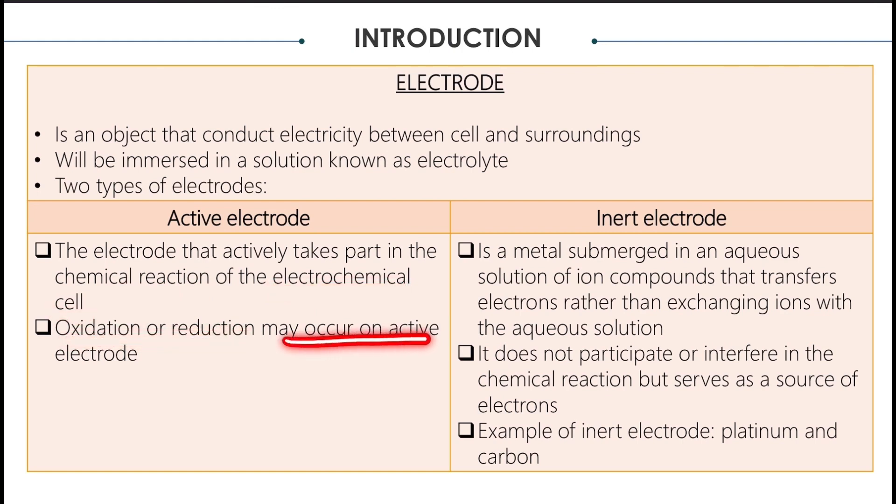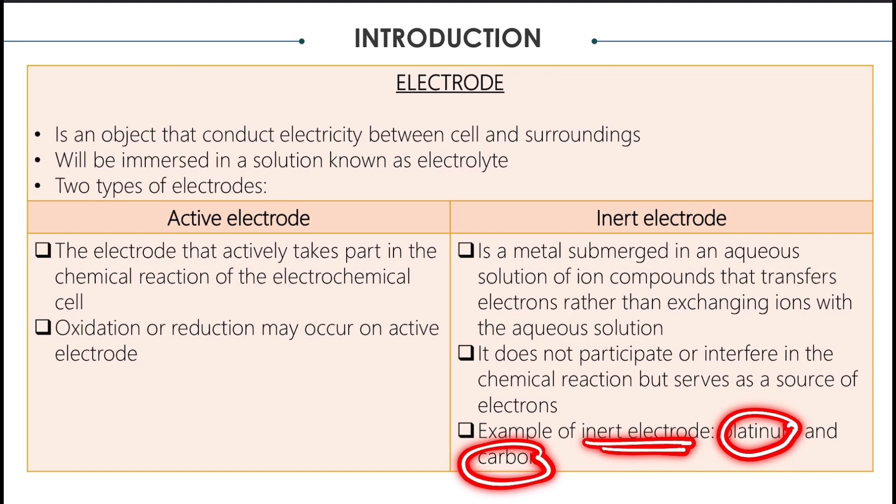Oxidation or reduction may occur on active electrodes. But for inert electrodes, it is a metal submerged in a solution of ion compounds that transfer electrons rather than exchanging ions with the solution. Inert electrodes will not participate or interfere in the chemical reaction but serve as a source of electrons. Examples of inert electrodes are platinum and carbon.